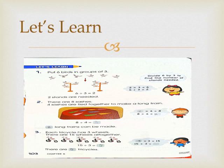Question number 3: Each tricycle has 3 wheels. There are 15 wheels altogether. Does 15 come in the 3 times table? Yes — 5 3s are 15. So 15 divided by 3 equals 5. There are 5 tricycles.